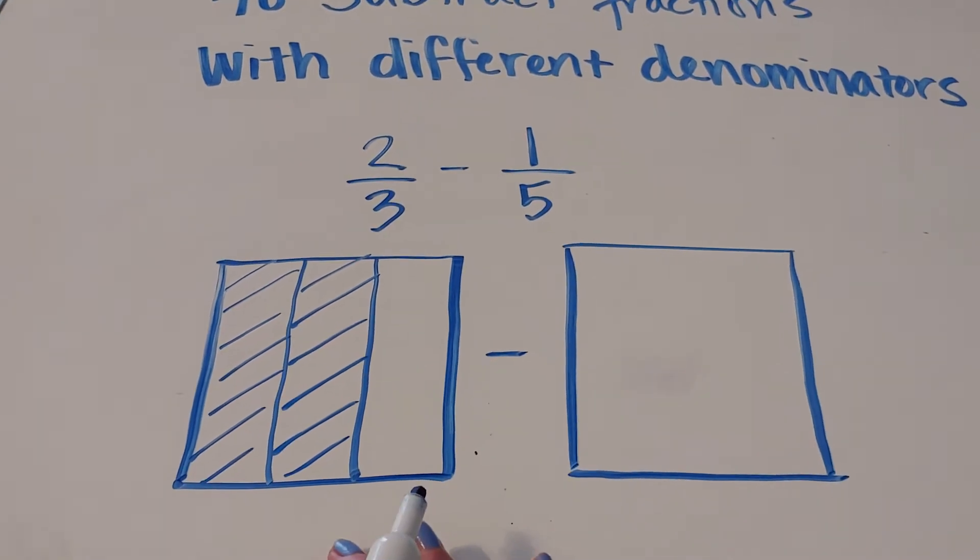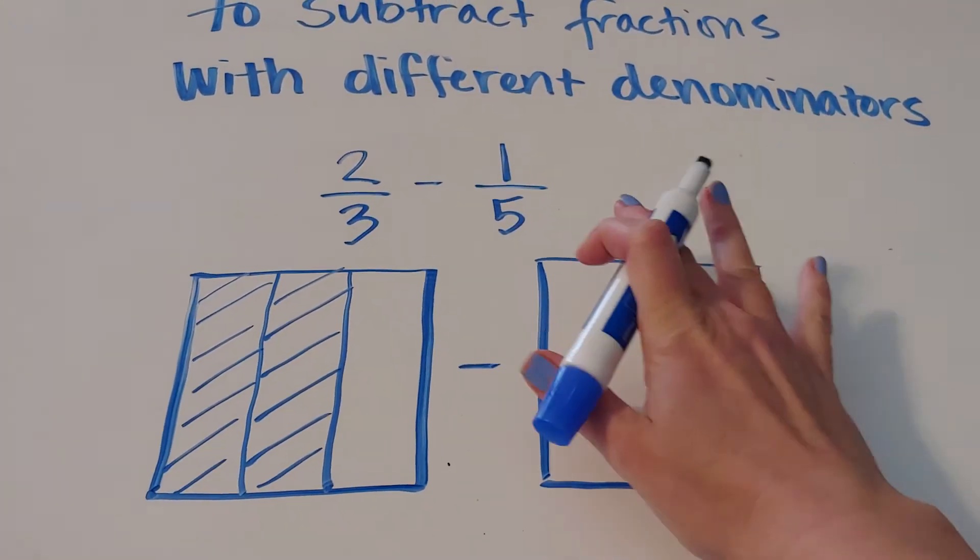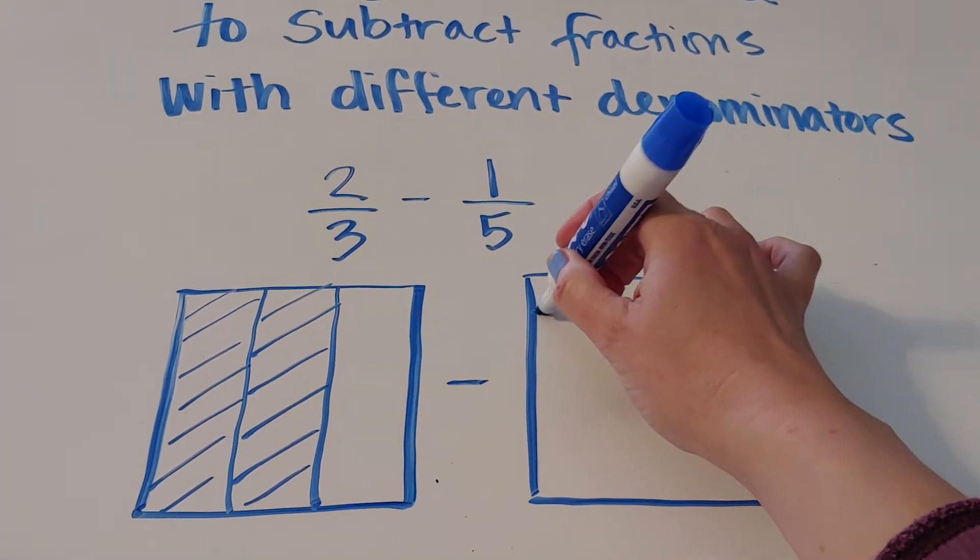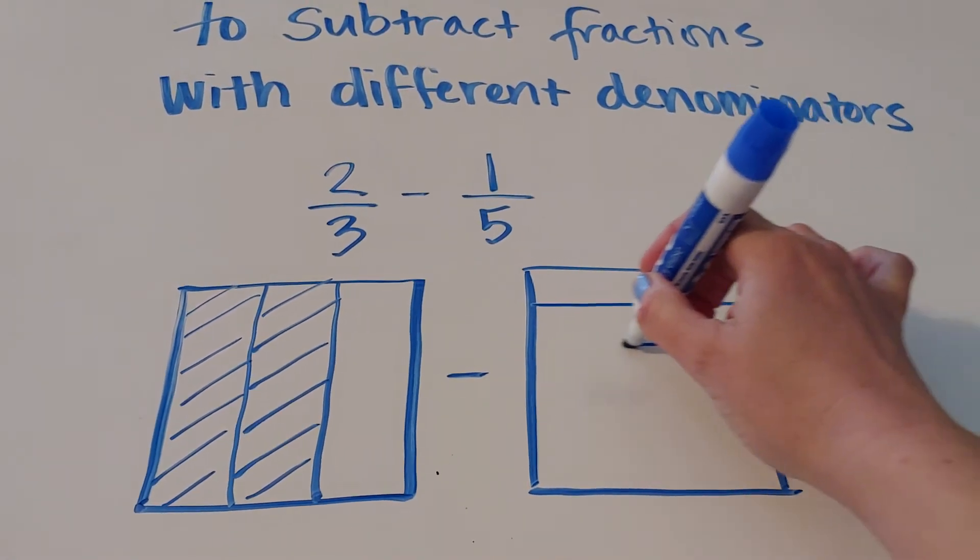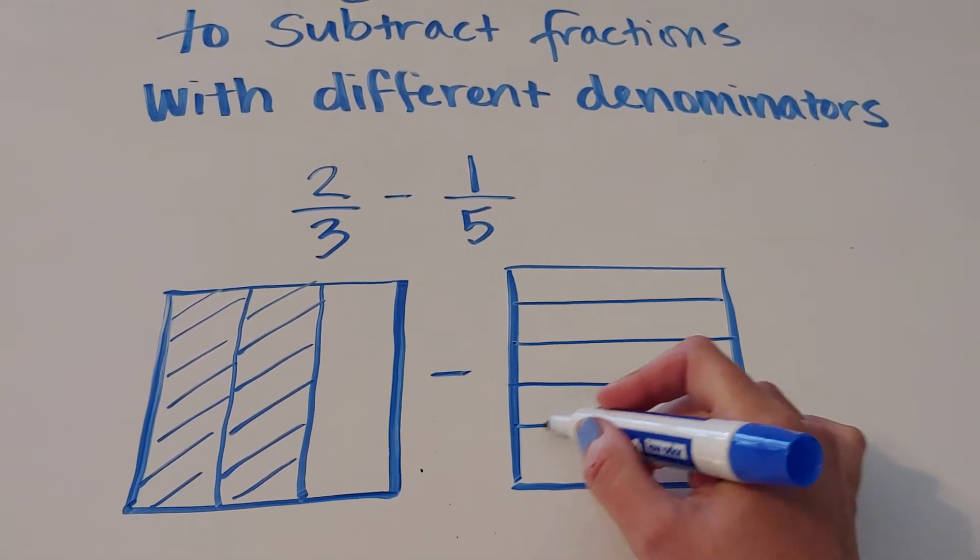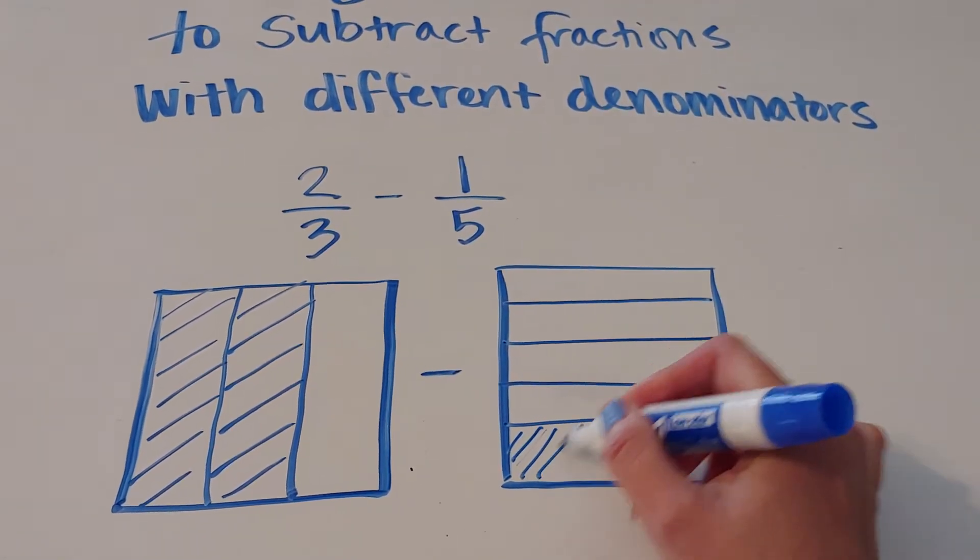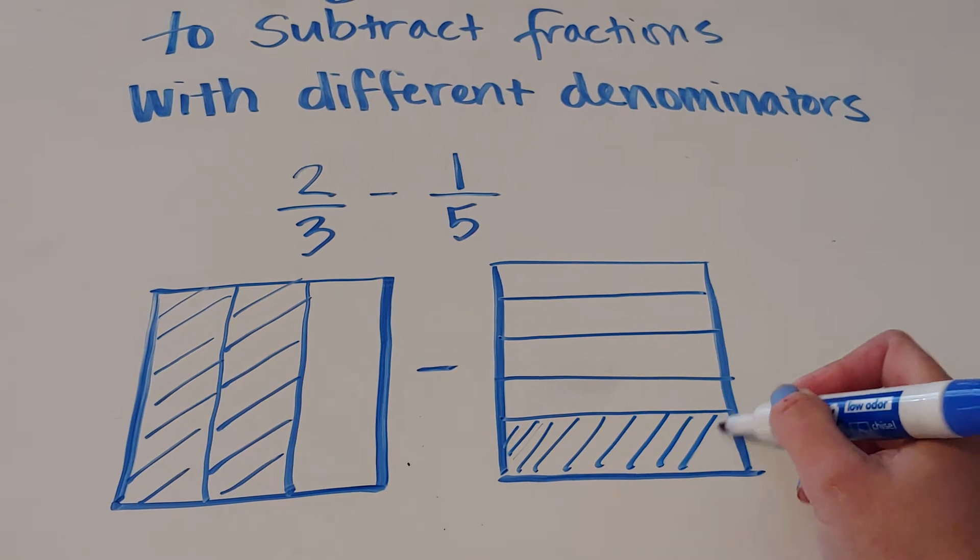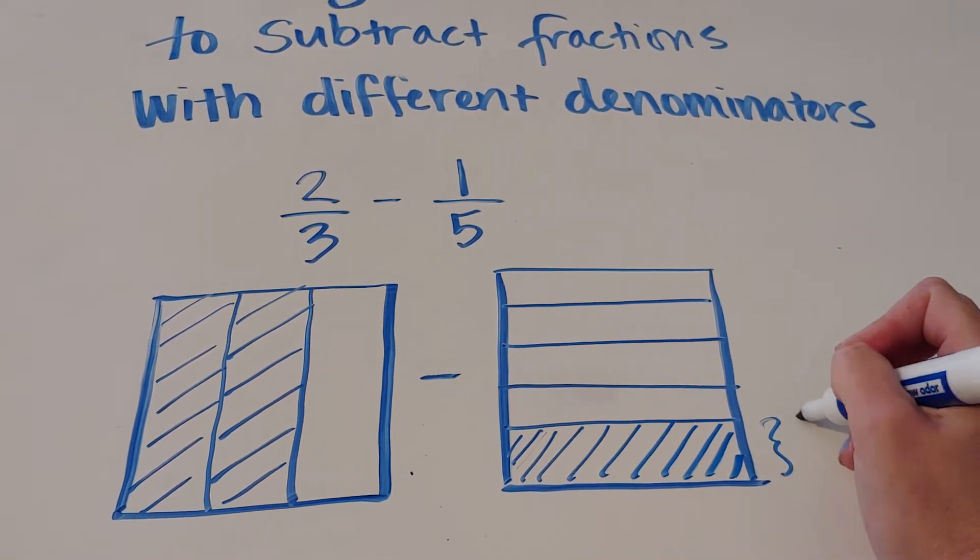Now I want to subtract away from that one fifth. So we're going to slice this into five parts, but we're going to slice this horizontally. So one, two, three, four, and five. And I want to shade just one. And as I said in the last video, for whatever reason, they shade from the bottom, but there we go. So here's one fifth.